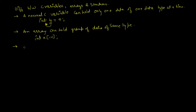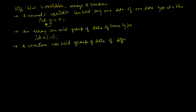A structure can hold a group of data of different data types. This is what makes structures different from arrays — in arrays you can only have similar kinds of data, but in structures you can have an integer, a character, a float, a double, or a long double all within one structure.